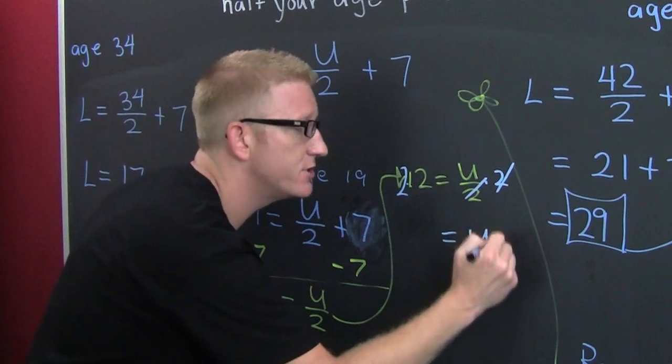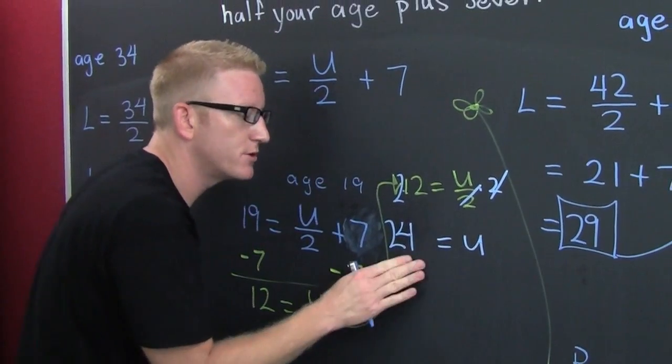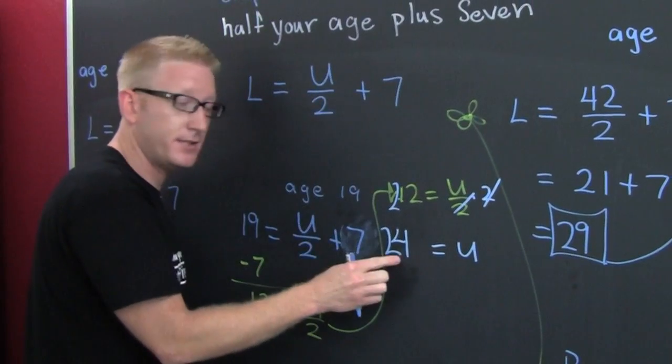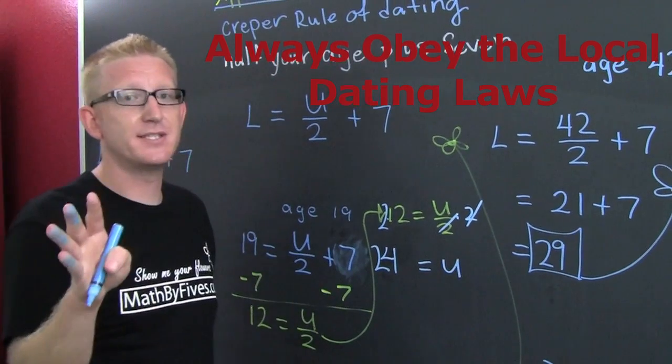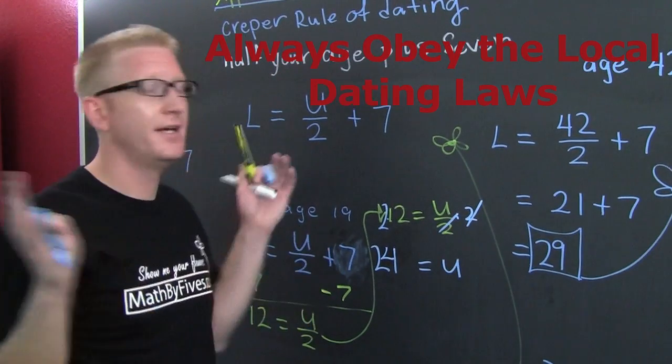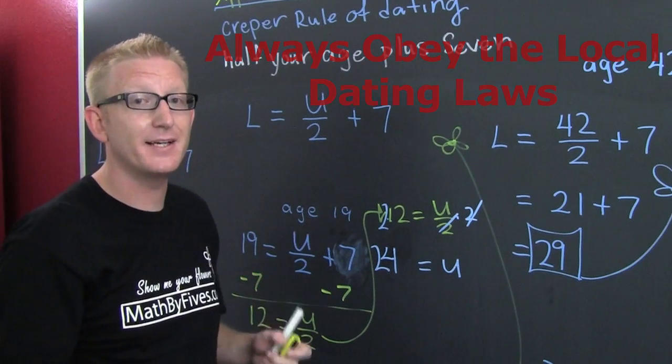You turn out to be 24. So what does that mean? If you're 19, you probably shouldn't be dating anybody more than 24 years of age. Now that's just what society says, and I understand it happens, but hey, you might get a couple of looks.